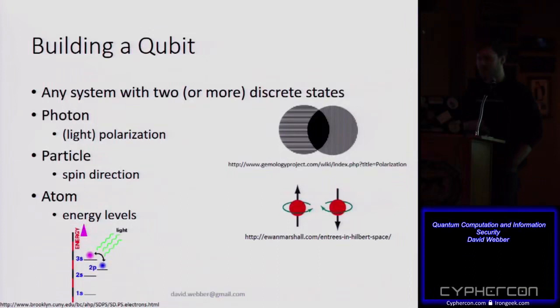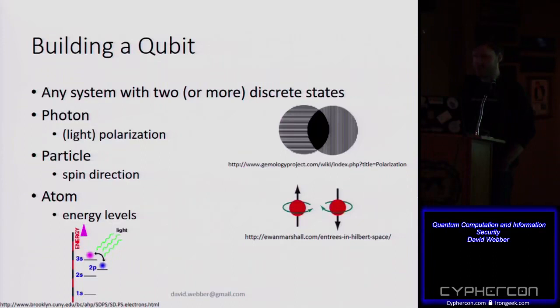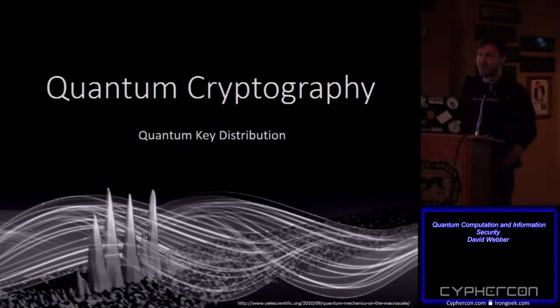How do we build a qubit? You can use any system with two or more discrete states: a photon's polarization (horizontal or vertical), a particle's spin direction (up or down), or an atom's energy levels (ground state or excited state). There are different physical realizations of a qubit, each with different advantages and disadvantages. That was the introduction to quantum mechanics — now let me show you how to use it to securely transmit messages.